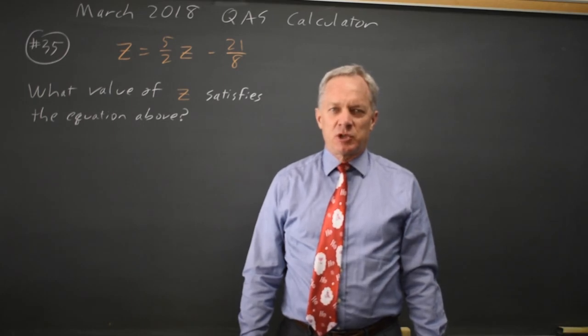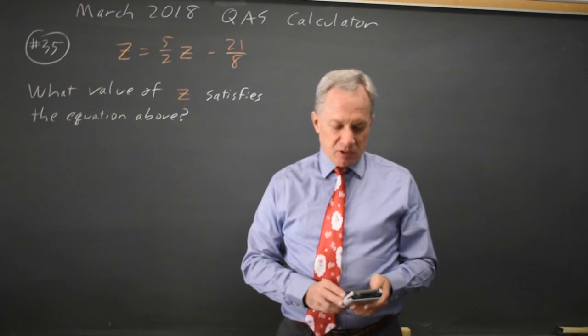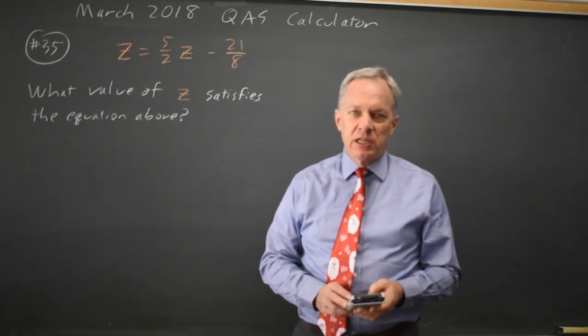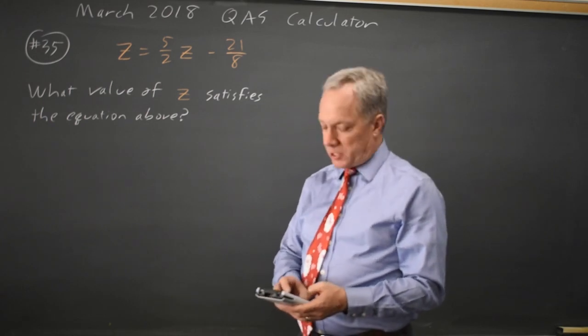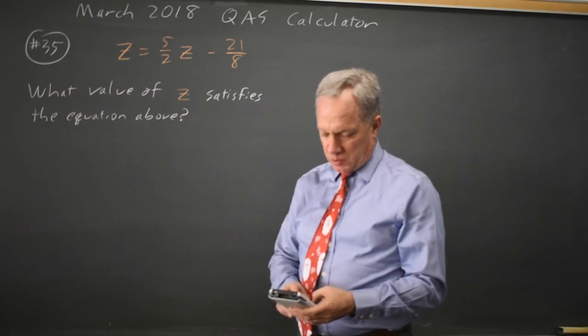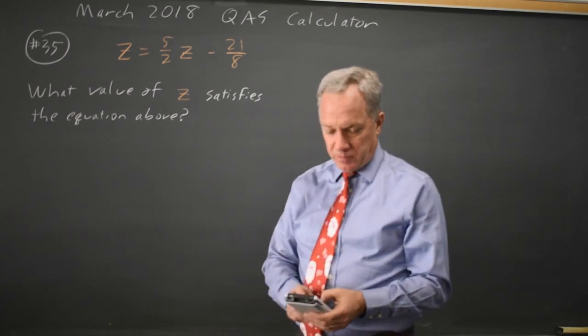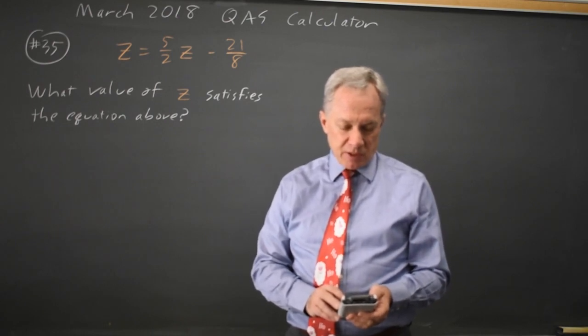This is question 35. College Board is asking us to solve an equation with only one variable, and I can do this on my graphing calculator most easily if I put the left side into y1 and the right side into y2: 5 halves x minus 21 over 8. I'll use zoom 6 to get the standard window.